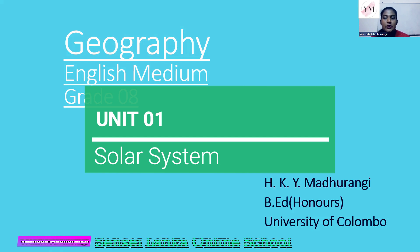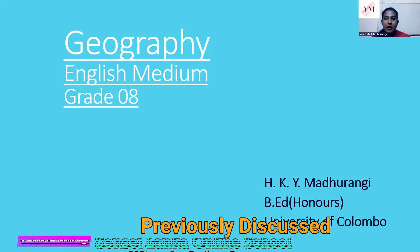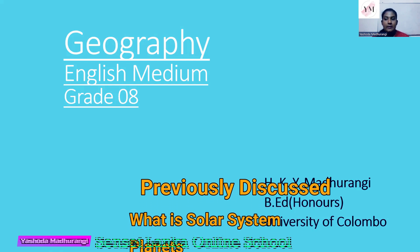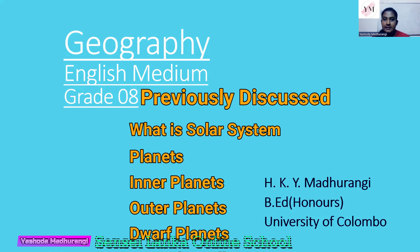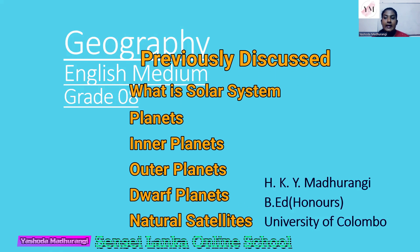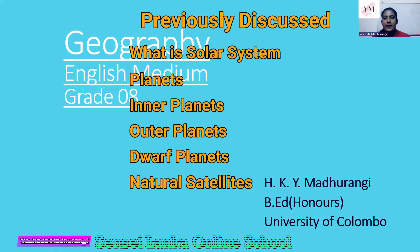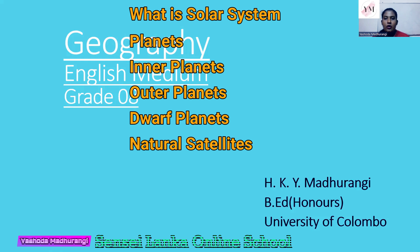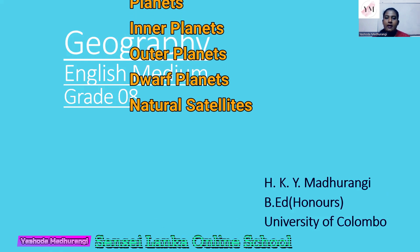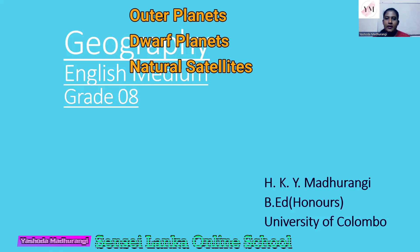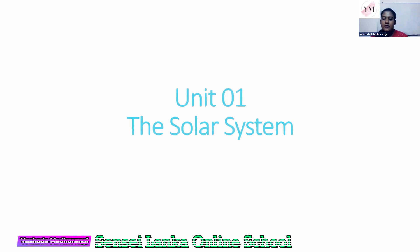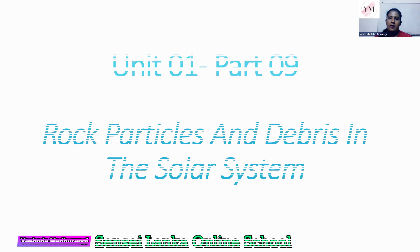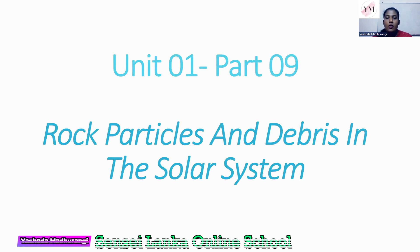So I have introduced you what is the solar system and then about the planets. We learned about the inner planets, the outer planets, and also dwarf planets and natural satellites — that was my last topic. So today also I am here with another topic related to Unit No. 1. Our lesson today is Part 9: Rock Particles and Debris in the Solar System.